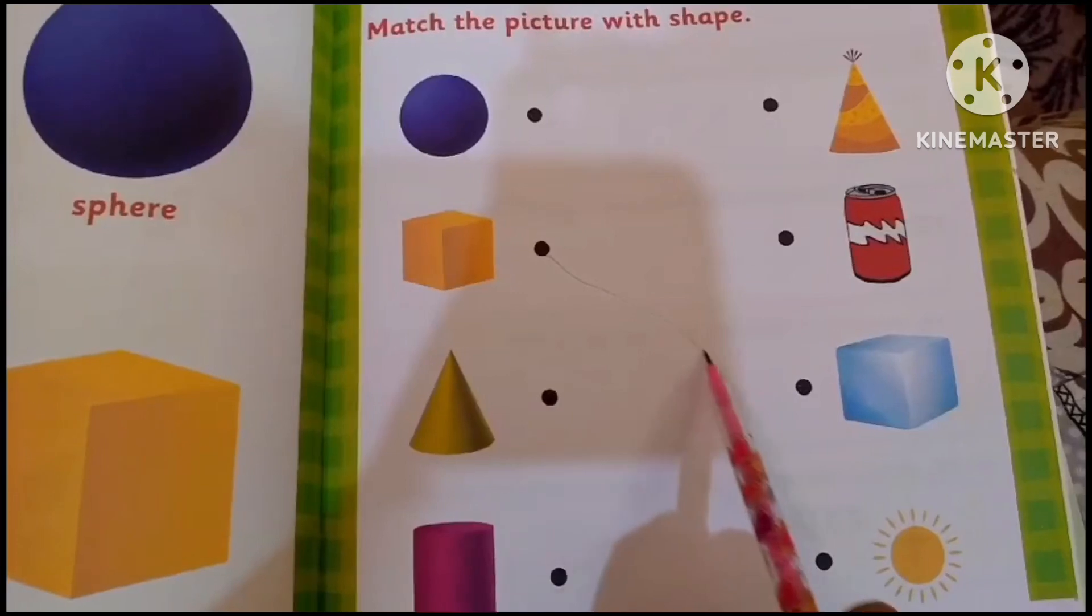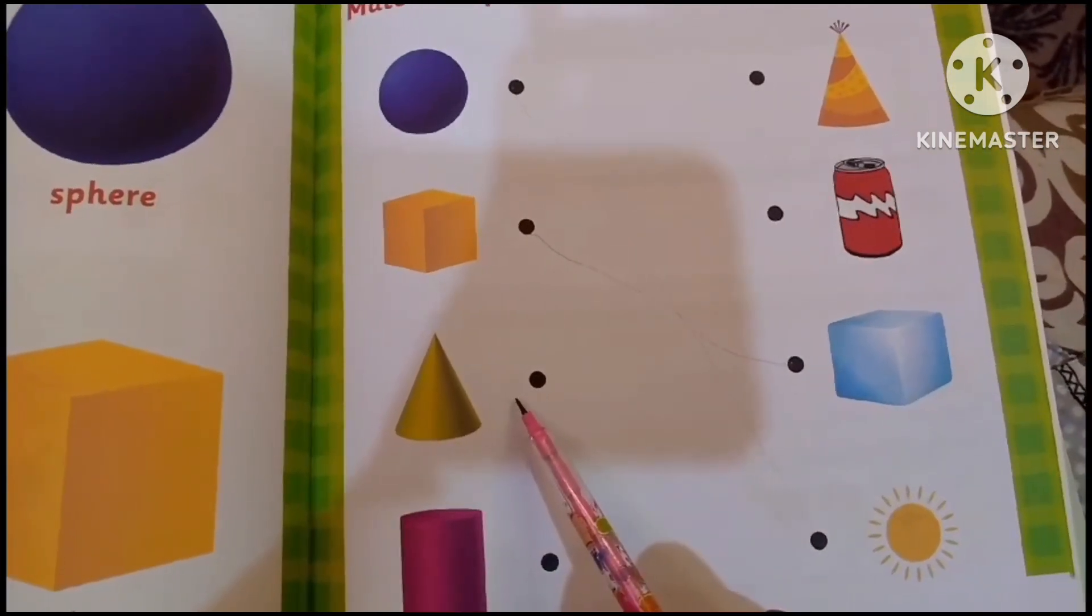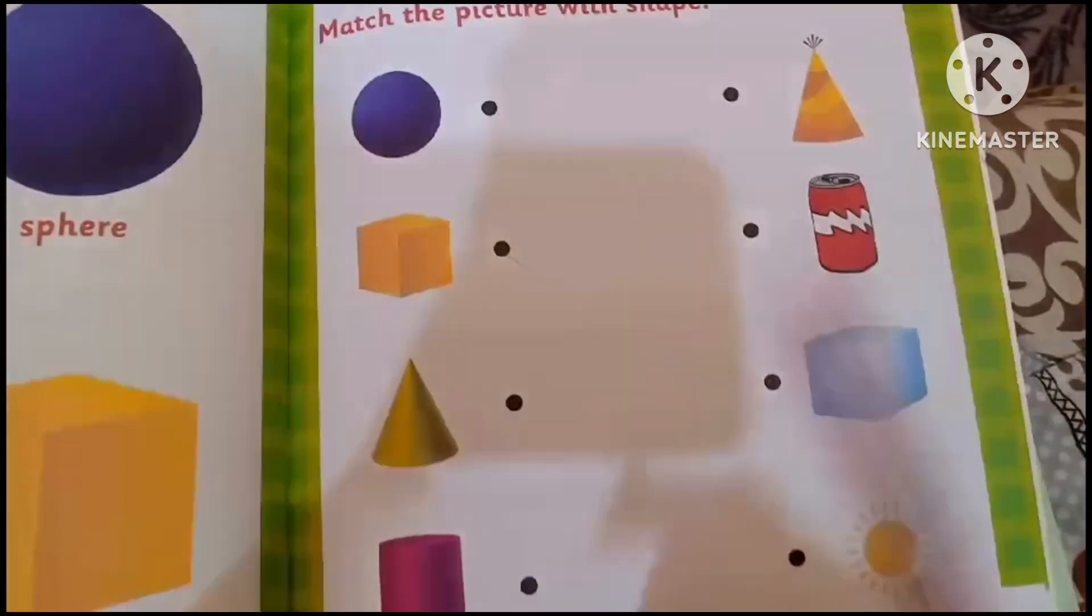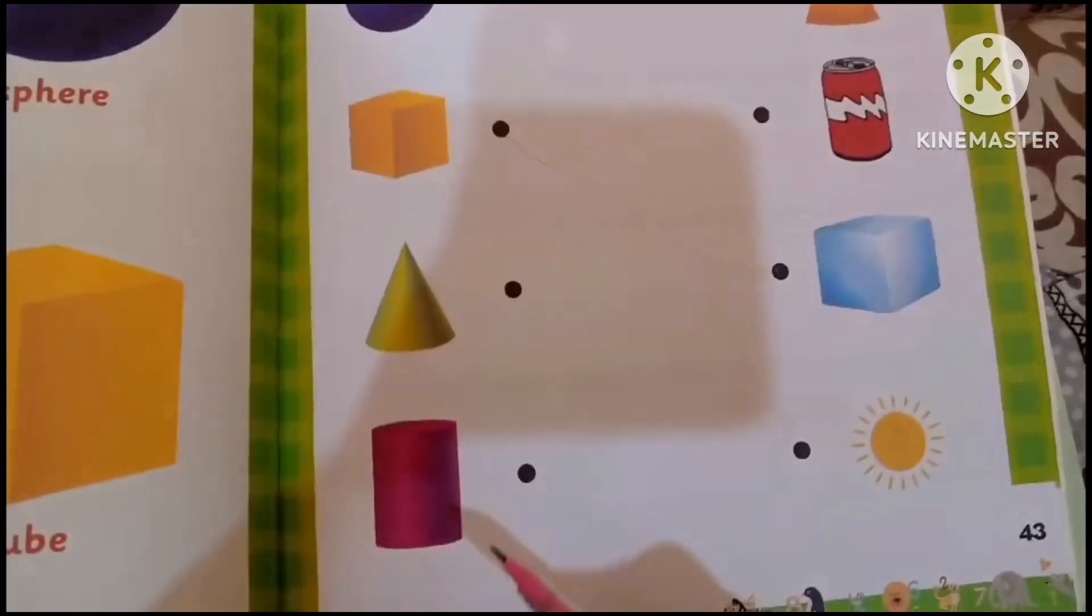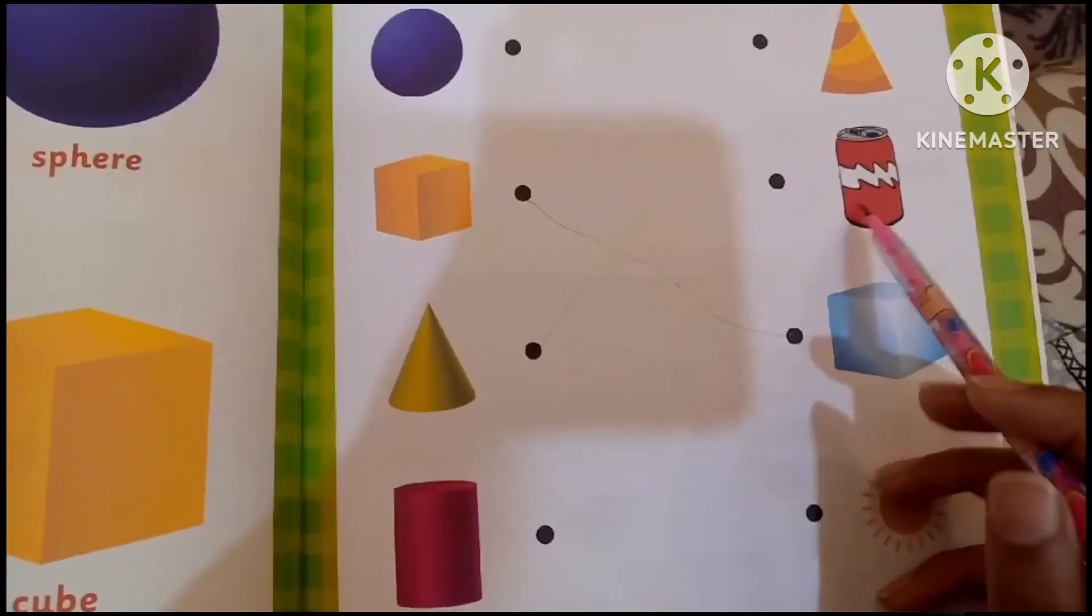with the cube, like an ice cube. This is a cone shape - match the cone with the birthday cap. And this is a cylinder - this can is a type of cylinder.